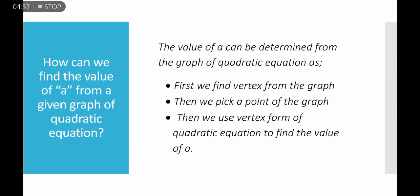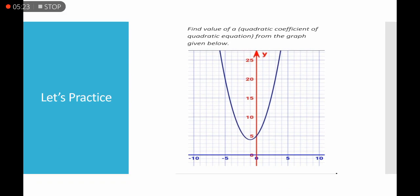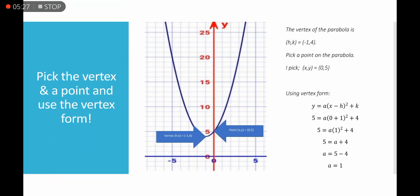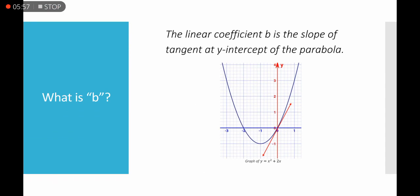To find the value of a from a given graph, first find the vertex, then pick a point on the graph, and use the vertex form of the quadratic equation to solve for a. For example, given a graph with vertex (h, k) = (-1, 4) and a point (x, y) = (0, 5), substituting into the vertex form gives a = 1.